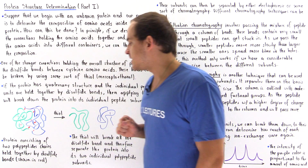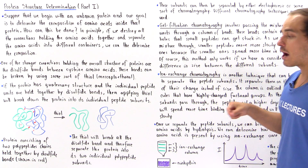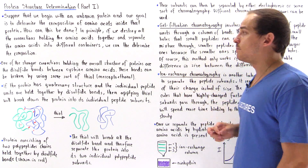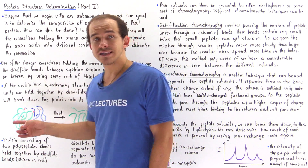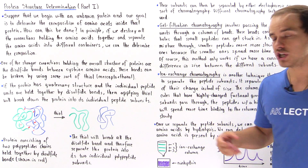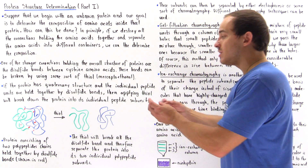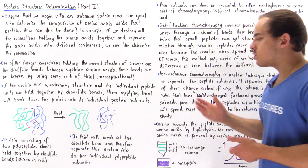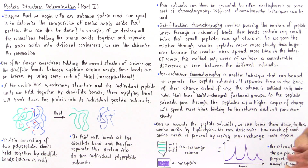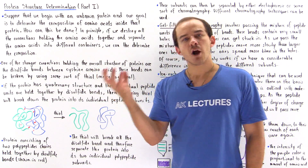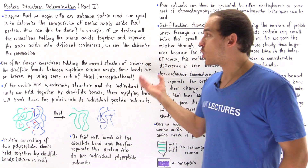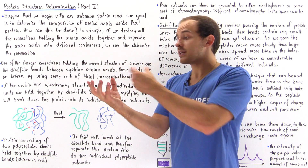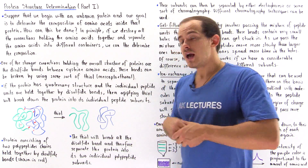Once we break all these bonds, we separate our amino acids into their individual forms. When we mix the protein with a thiol — for example, mercaptoethanol — we break all the red disulfide bonds via a reduction reaction and form our two individual separate polypeptide chains, the green and the blue. So the thiol breaks all our disulfide bonds and separates the protein into its two individual peptides. We now have a beaker that contains these two individual separate polypeptide chains.